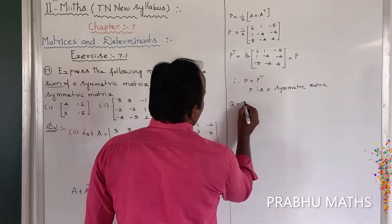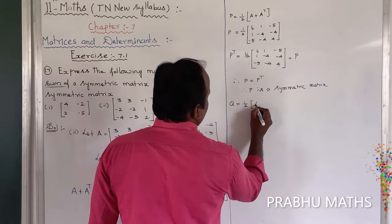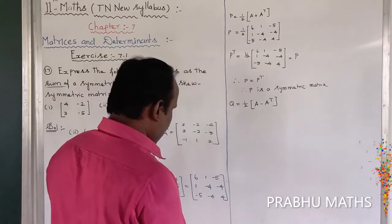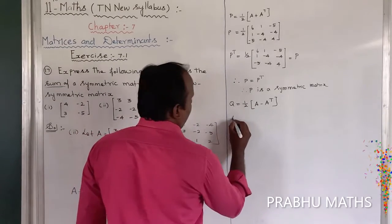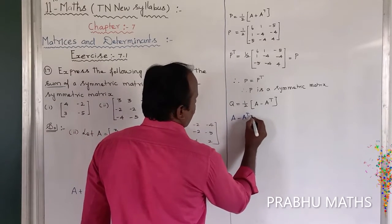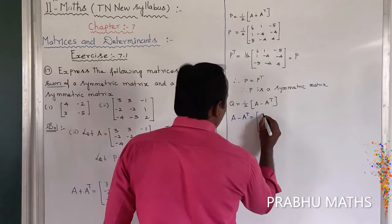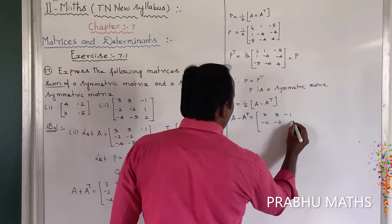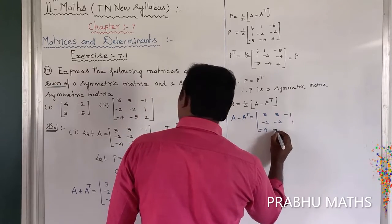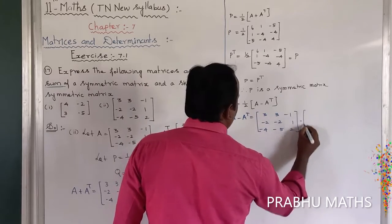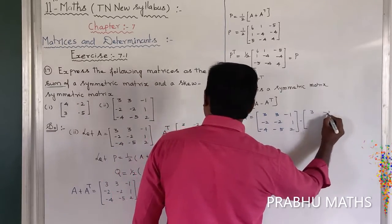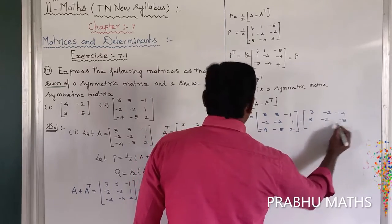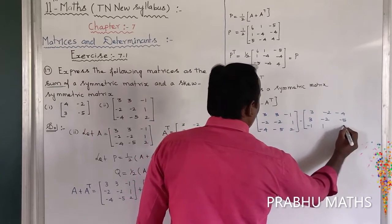Now for Q, Q equals 1 by 2 into A minus A transpose. Computing A minus A transpose: the A value has rows 3, 3, minus 1; then minus 2, minus 2, 1; then minus 4, minus 5, 2. The A transpose has rows 3, minus 2, minus 4; then 3, minus 2, minus 5; then minus 1, 1, 2.